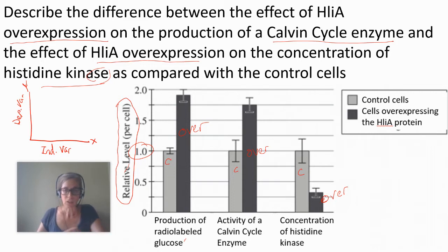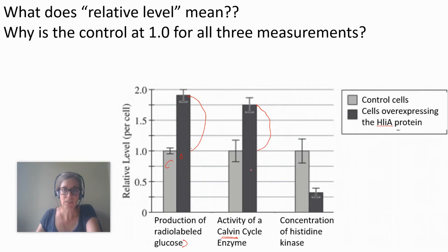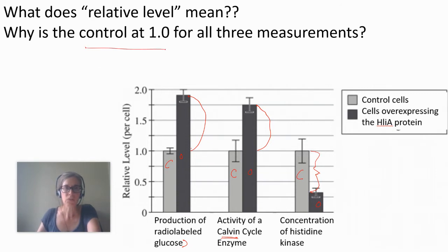So that's another weird thing to look at. 'Relative' means in this case you're making more radiolabeled glucose in the overexpressed cells than in the control cells — quite a bit more. You have more of a Calvin cycle enzyme in the overexpressed cells versus the control — about 75% more. And then there is way less histidine kinase activity in the overexpressed cells. So if you ever see a control at 1 for every single thing, you're looking at how much more the experimental is versus the control.